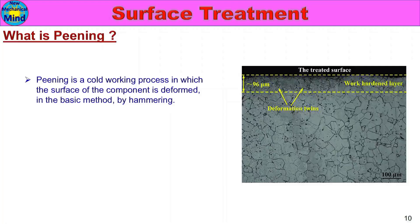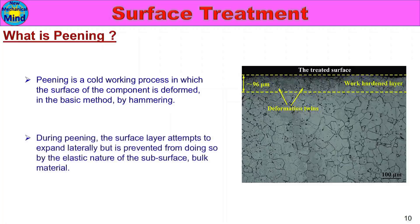Peening. During peening, the surface layer attempts to expand laterally but is prevented from doing so by the elastic nature of the subsurface bulk material. In the peening process, one piece of surface tries to expand because of the hammering action, but the part's material elastic property resists it.